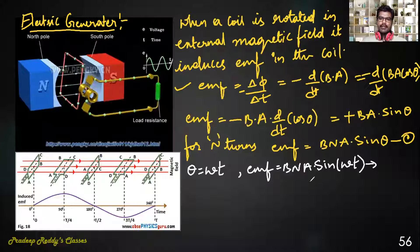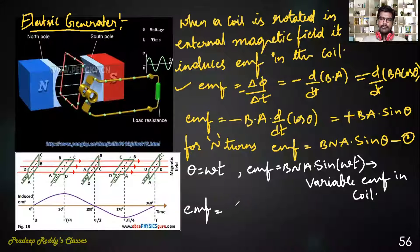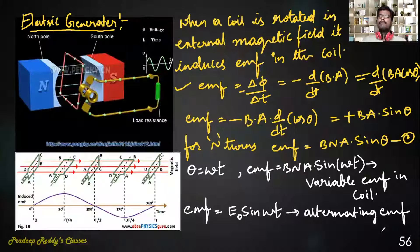The EMF induced is in the form of E₀ sin(ωt), which is alternating EMF. This is the mathematical equation for EMF developed in the electric generator.